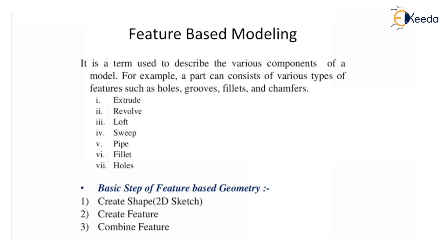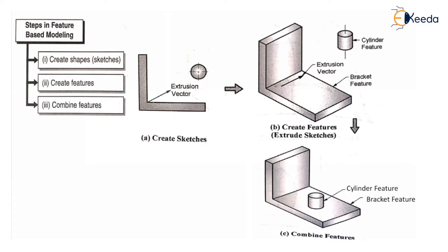The basic steps of feature-based geometry are: create shape, create feature, and combine feature. These steps we will study in the next part.